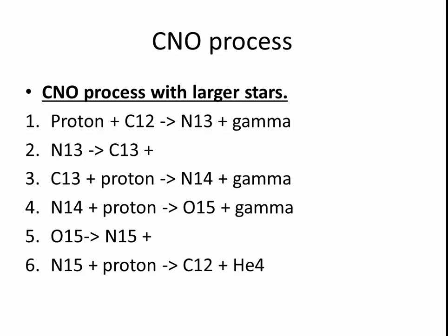There's also what's called the CNO process - carbon, nitrogen, oxygen. This happens in larger stars. You start with a carbon, combines with or fuses with a proton, produces a nitrogen-13.